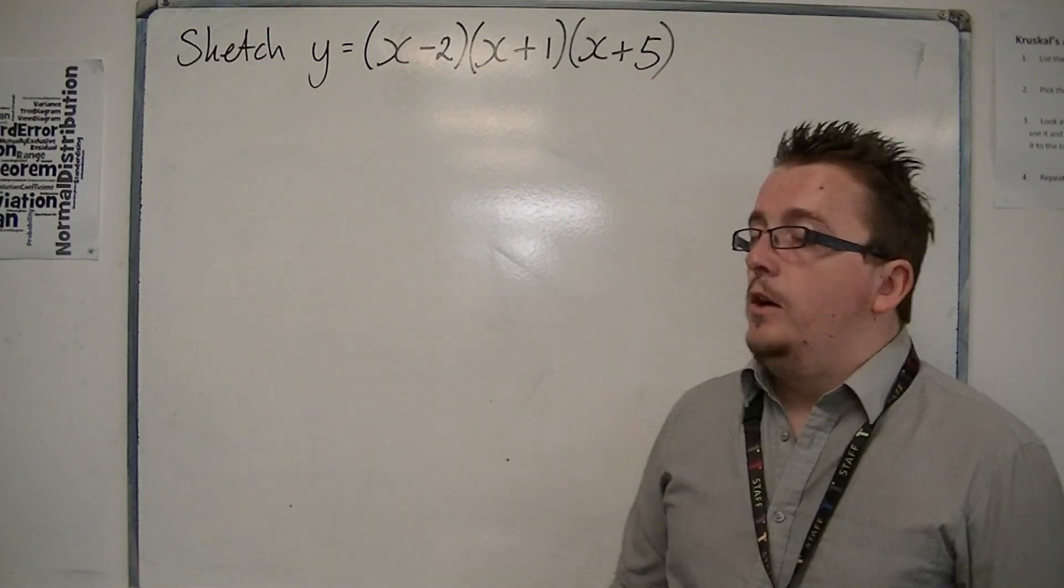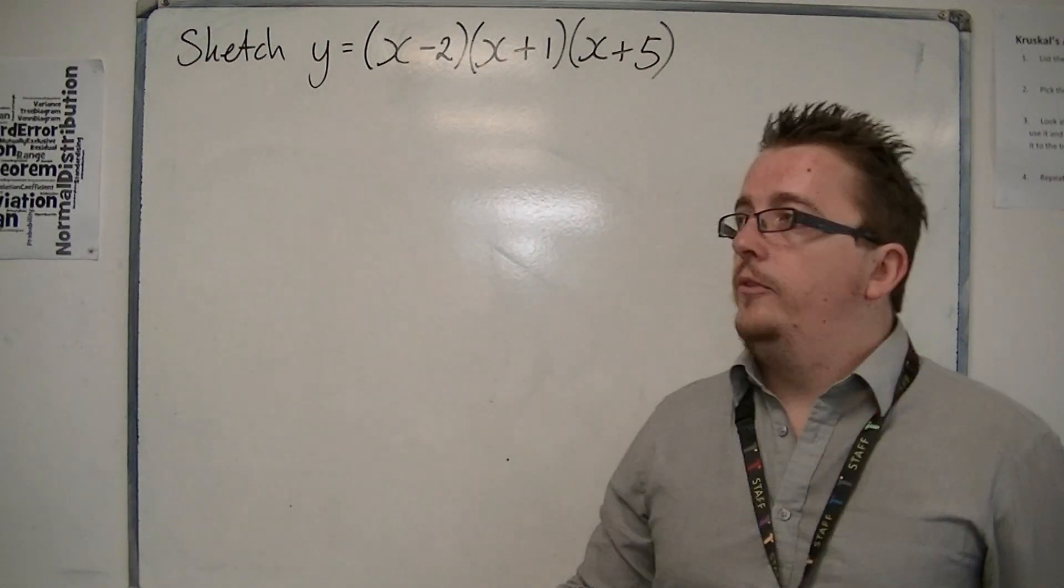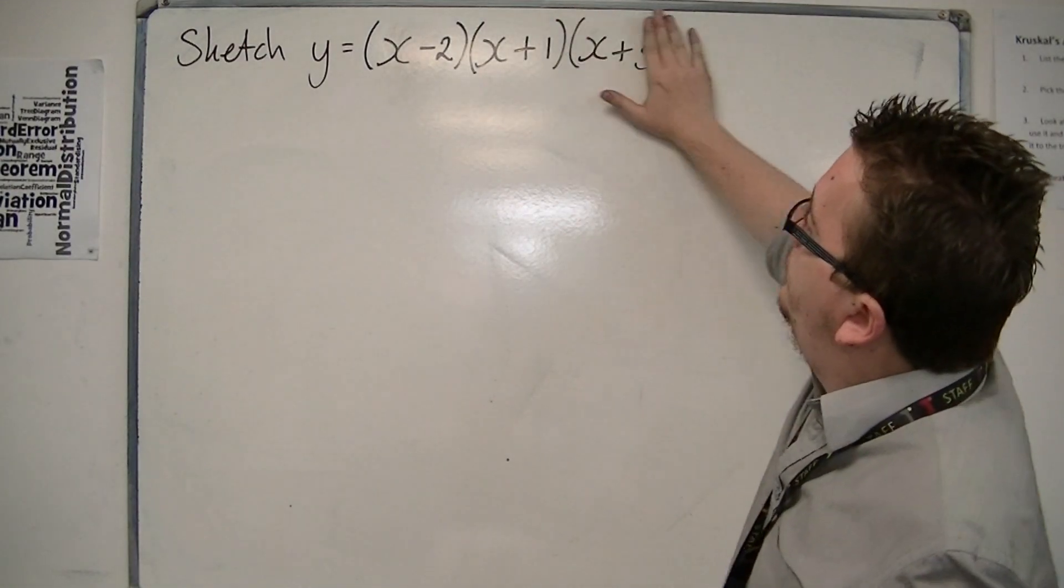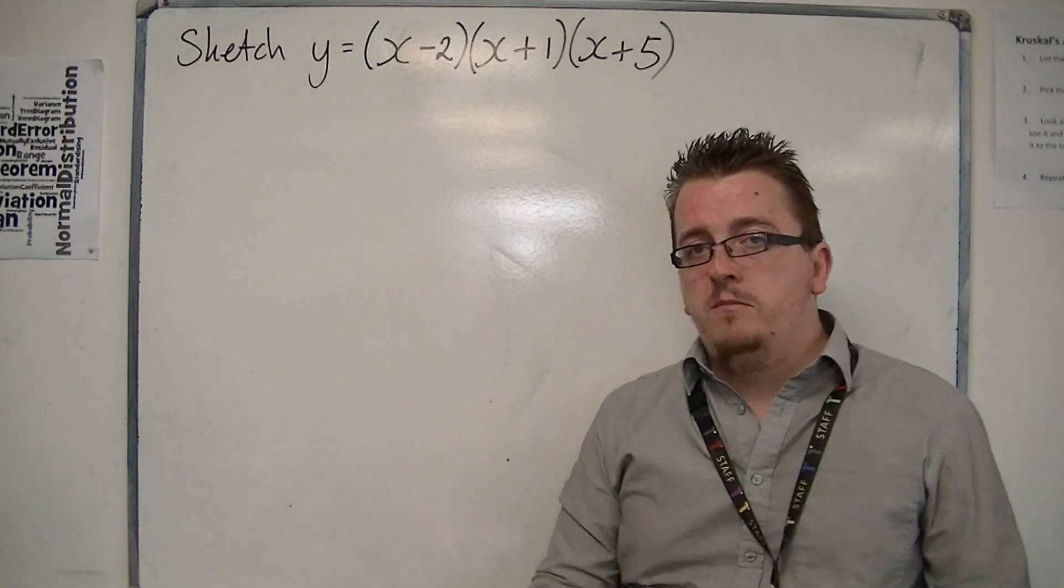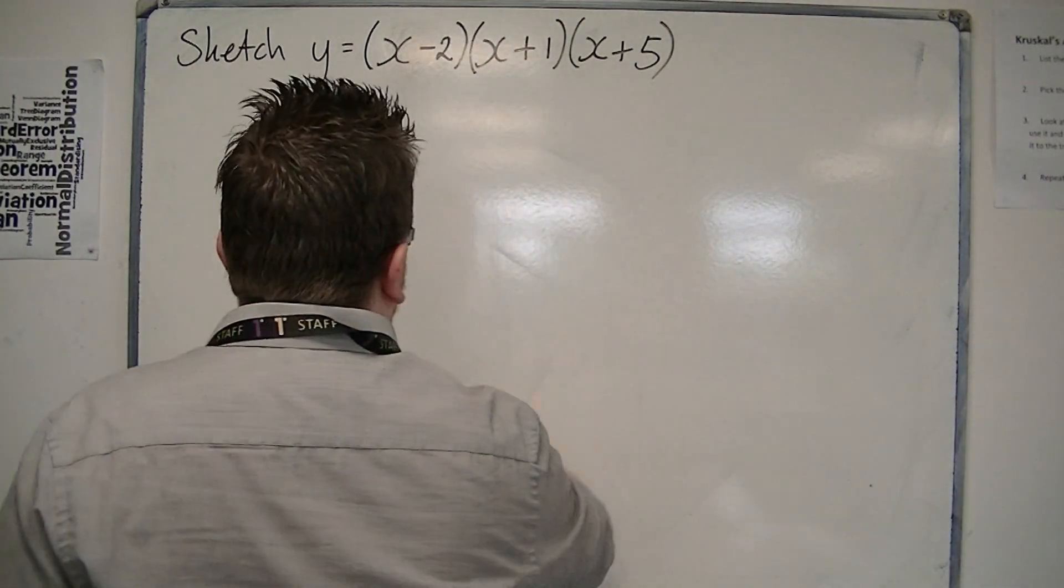So in this case, we've got a product of three linear terms. Each one of these is linear. We multiply them all together, so it's a product of linear terms.